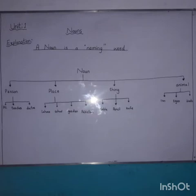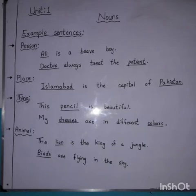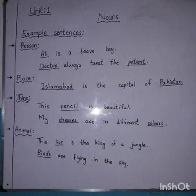Birds are also included in animal name. Now we discuss some example sentences. First, about person: number one — Ali is a brave boy. In this sentence, Ali is a person. Number two — Doctor always treats the patient. In this sentence, doctor and patient both are known as person.